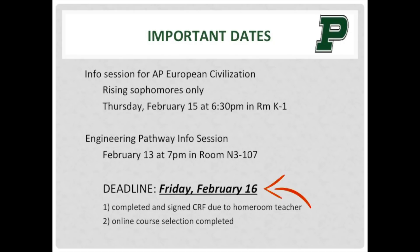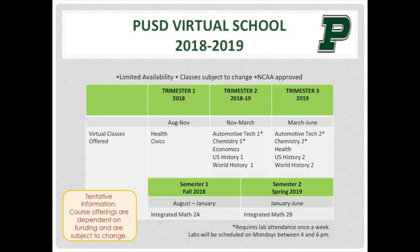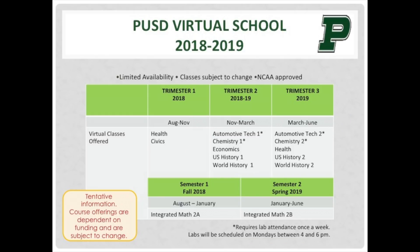That is step one. Step two, which also needs to be completed by February 16th, is entering all your courses online. Please be sure to complete both of these important steps. In addition to your 15 selections, students have the option to take online courses through the PUSD Virtual School. Most of these courses are run on a trimester schedule. Please note, courses with an asterisk require a mandatory lab once a week on Mondays from 4 to 6 p.m. This opportunity is open to all high school students in the district; however, limited space is available and not all students get into the course selected. It is also important to be aware that course offerings are scheduled to change based on funding. If you are interested in requesting an online course, please refer to the specific section on your CRF. If you are selected for a course, you will receive a notification at the end of the school year.